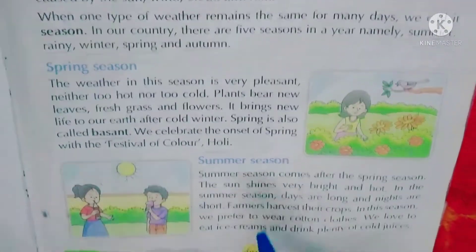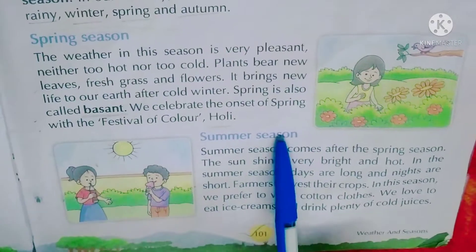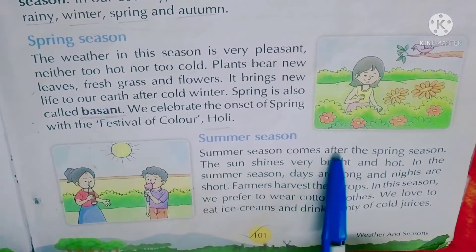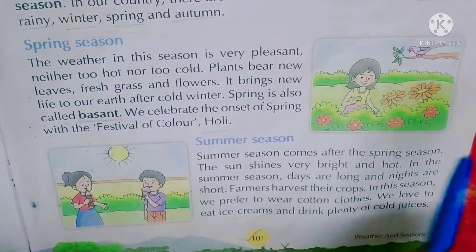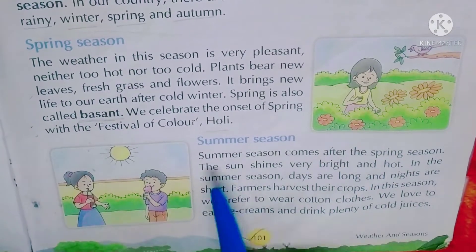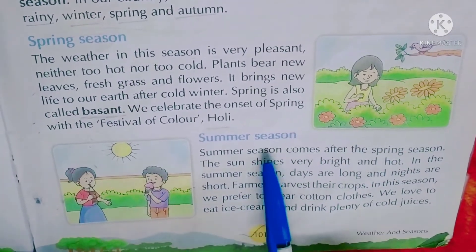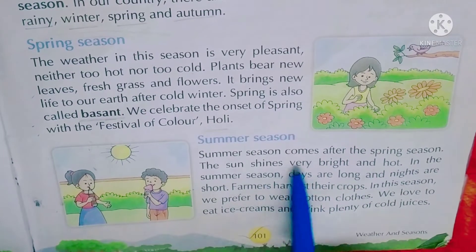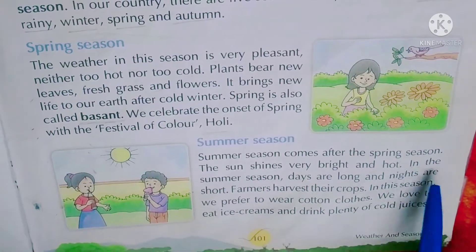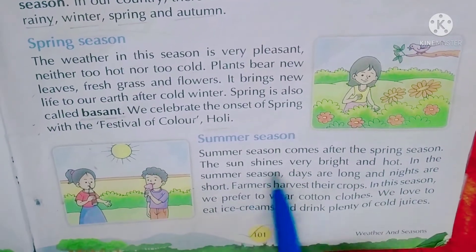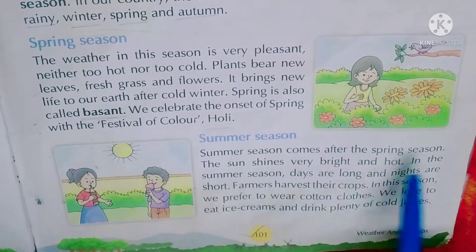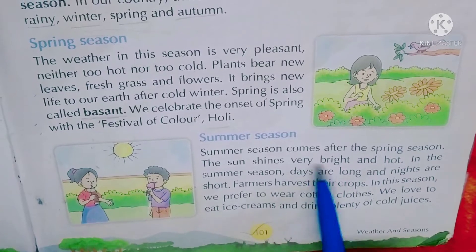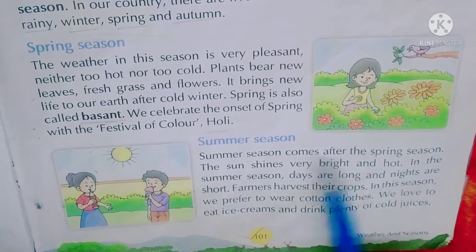Summer season - गर्मी की रितू। Summer season comes after the spring - बसंत रितू के बाद गर्मी का मौसम होता है। The sun shines very bright and hot - सूर्य बहुत चमकीला और बहुत गर्म होता है। Days are long and nights are short - गर्मी रितू में दिन लंबे होते हैं, रातें छोटी होती हैं।